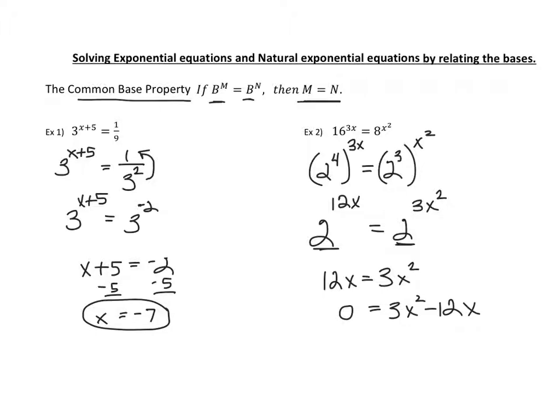Let's factor. We can factor out a common 3x, which leaves us x minus 4. Setting each factor equal to 0, we get 3x equals 0, which gives us x equals 0, and x minus 4 equals 0 gives us x equals 4. So we have 2 possible answers: x equals 4 and x equals 0.